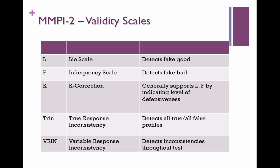The L scale, or lie scale, is elevated when people are trying to present themselves in the most positive light. Sometimes this is kind of appropriate — if you're looking for a job or wanting to be a police officer, for example. But if you're so defensive that you will not admit to any negative symptoms, then the profile isn't valid. We know that you've faked good, basically.